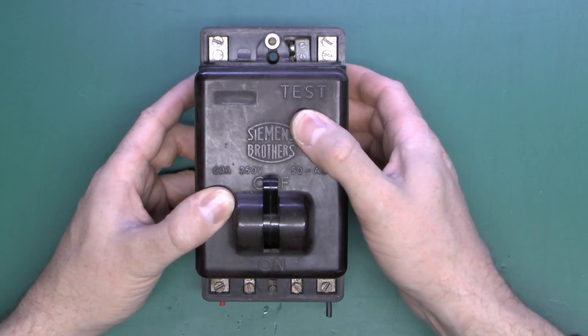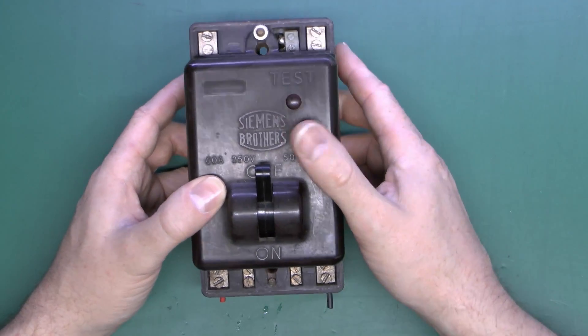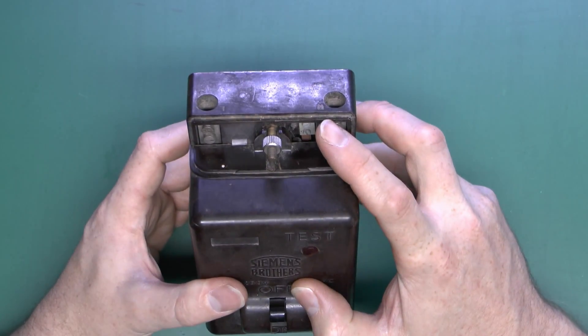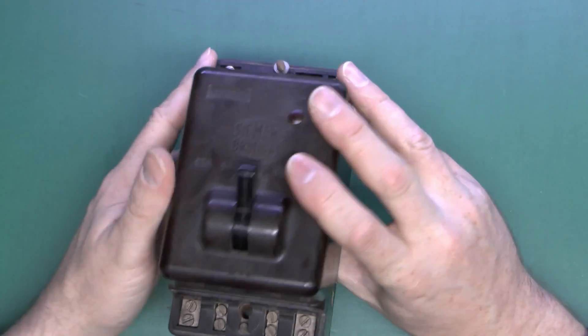The test button here is unfortunately somewhat jammed and sticky. Terminal-wise we've got the two terminals at the top here which are marked L and N for line and neutral, and on the bottom...